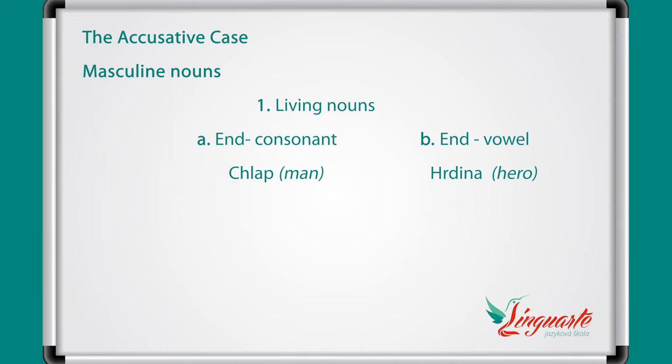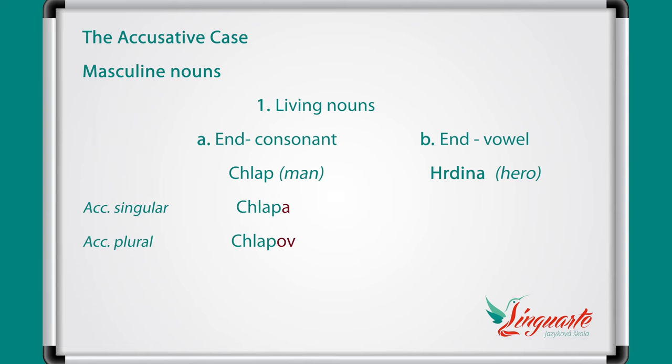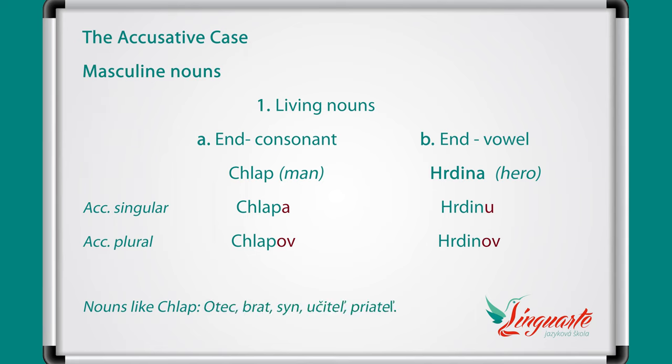The accusative case is formed by adding some endings to the words. For chlap: chlapa for singular and chlapov for plural. Hrdinu is singular and hrdinov plural. Other nouns with the same changes as chlap are otec (father), brat (brother), syn (son), učiteľ (teacher), priateľ (friend).